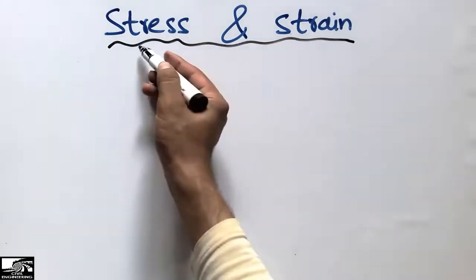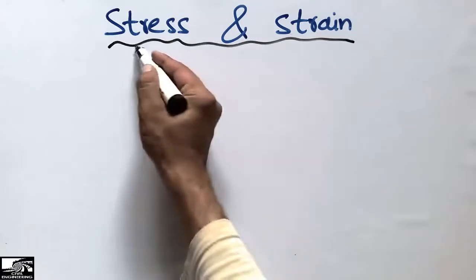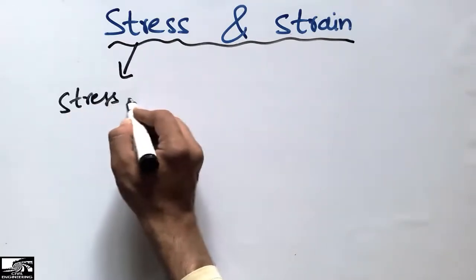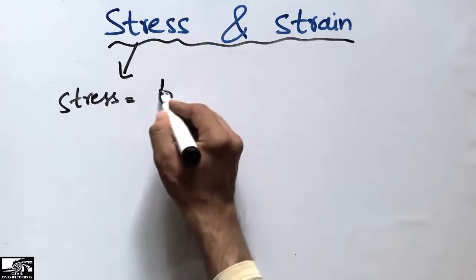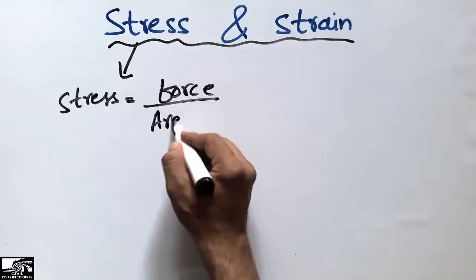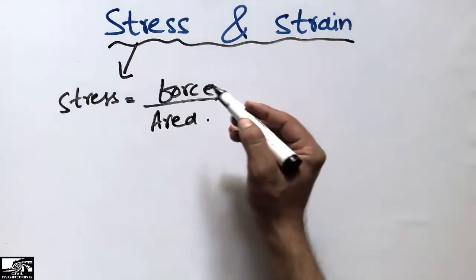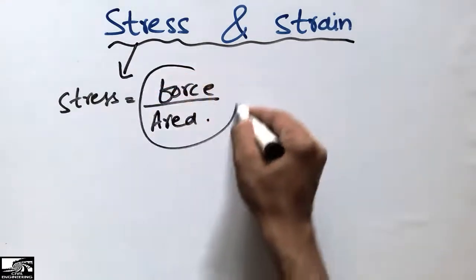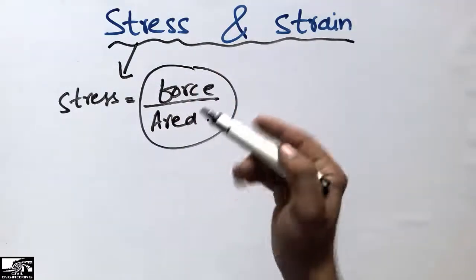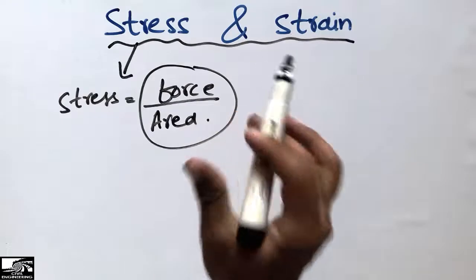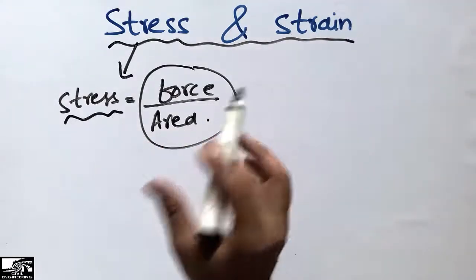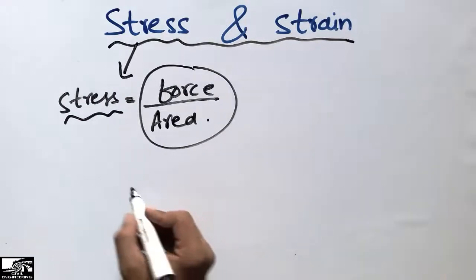Stress can be defined as the ratio of the applied force divided by the per unit area of the object. This is the definition of stress: the force acting on a body divided by the area of the object gives us how much stress is acting on it.